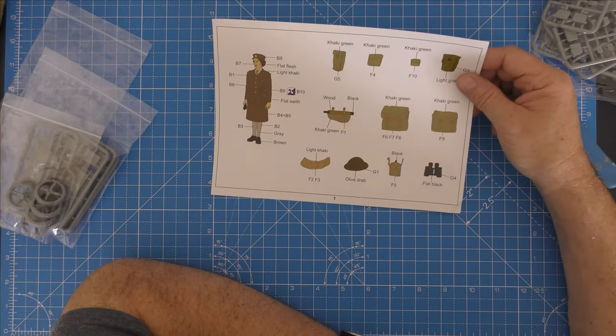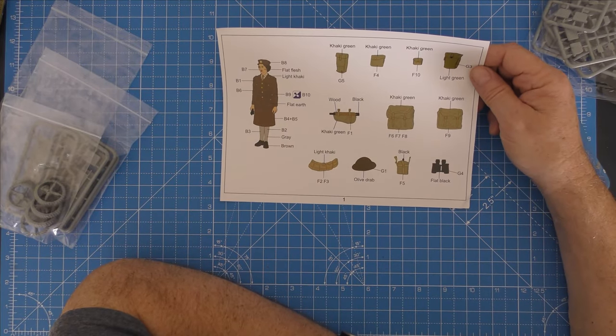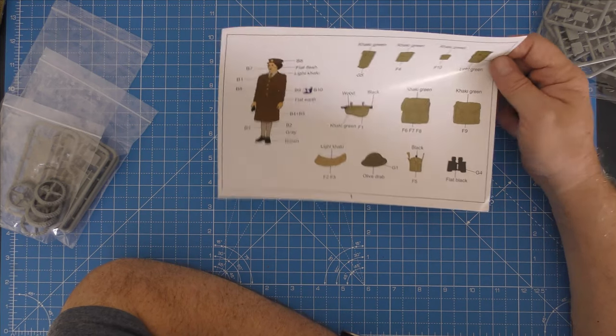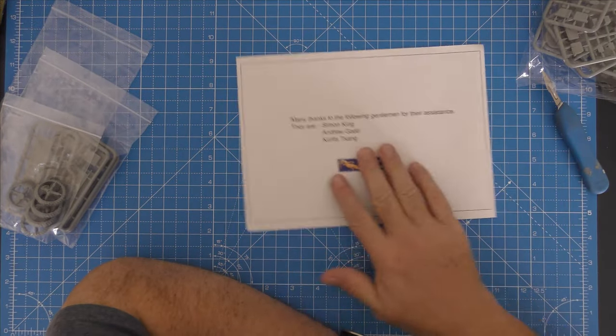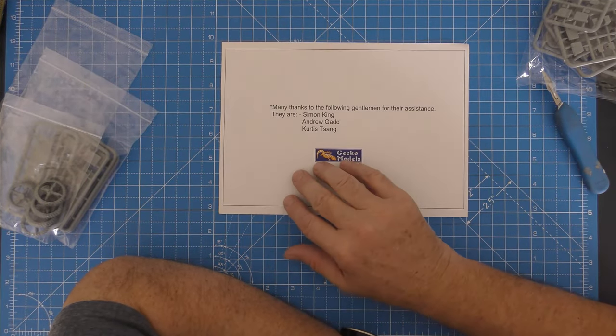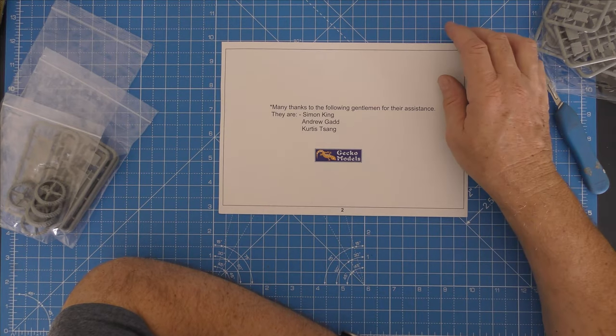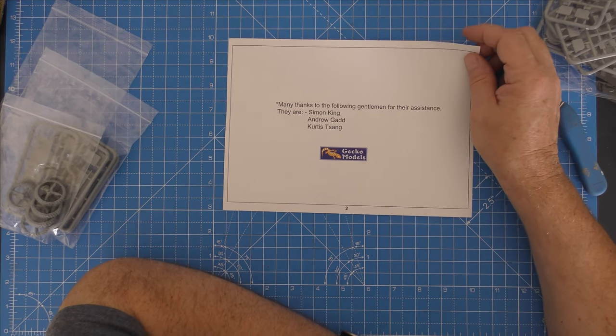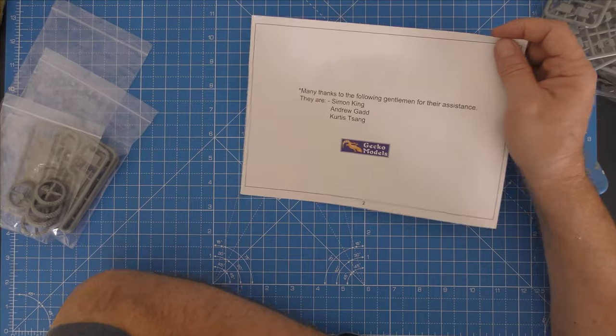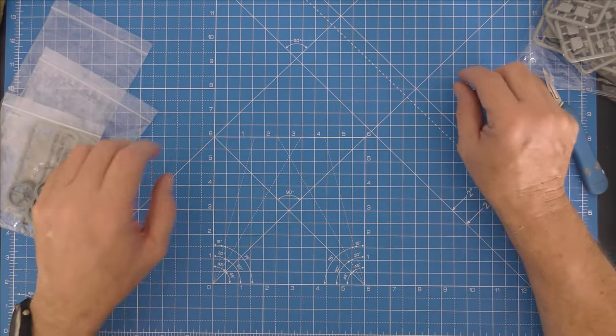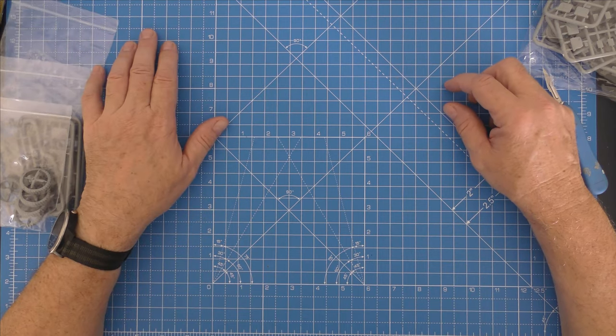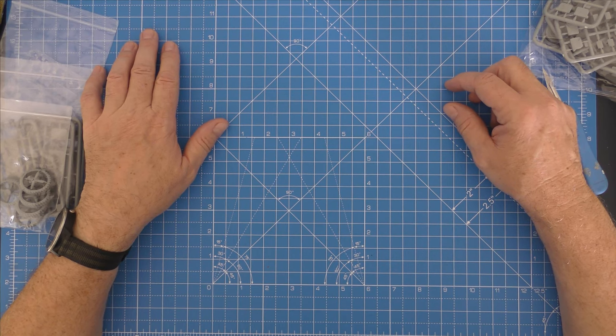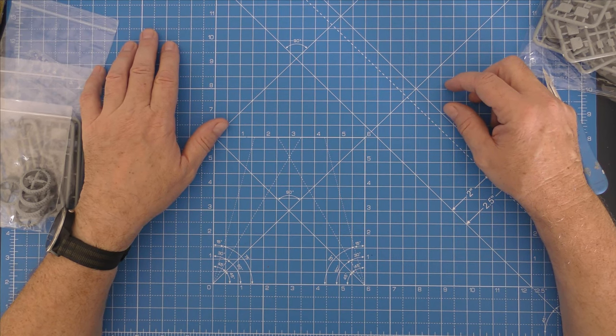And then you got this little sheet for painting up the Princess, God bless her. Very nice that they've included that. And then on the back here it's got many thanks to the following gentlemen for their assistance: Simon King, Andrew Gad, and Curtis Sang. Sorry Curtis if you ever find your way onto my terrible video. I apologize for mangling your surname. Anyway guys, hope you're all keeping well. Survived the extremely hot weather earlier in the year here in England, or the UK, but I am in England. So there you go. Anyway guys, happy modeling and look after yourselves. Bye.